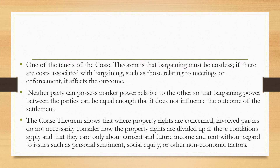One of the tenets of this theorem is that bargaining must be costless. If there are costs associated with bargaining, such as those related to meetings or enforcement, then it will affect the outcome. Neither party can possess market power relative to the other, so that the bargaining between the two parties can be equal enough that it does not influence the outcome of the settlement. The theorem shows that where property rights are concerned, involved parties care only about the current and future income and expected outcome, without regard to issues such as personal settlements, equity, or other economic factors.